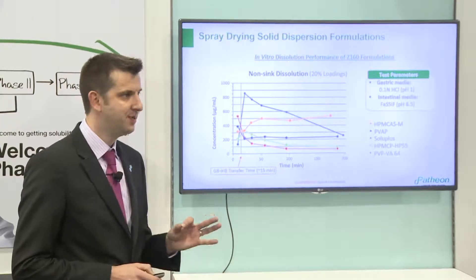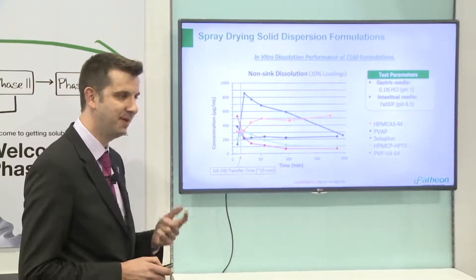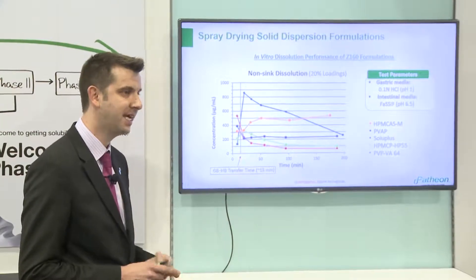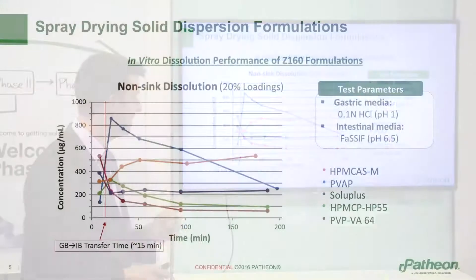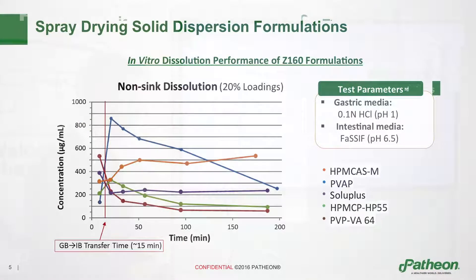The reason we're doing the solubility enhancement is to improve solubility and therefore bioavailability. One of the key tests for that is using a non-sink dissolution test in two different media. We start off in a gastric component and then move into an intestinal phase in our micro dissolution. This is important for understanding how the molecule is going to behave in the body, and also because some of these polymers are enteric polymers that will only start to dissolve at higher pHs.